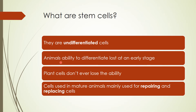Animals lose the ability to differentiate at an early stage. For us, this is when we're embryos and growing. But when we're born we don't have the ability to differentiate, so we can't grow limbs back. We do still have stem cells in places like our bone marrow, which I'll talk about later.